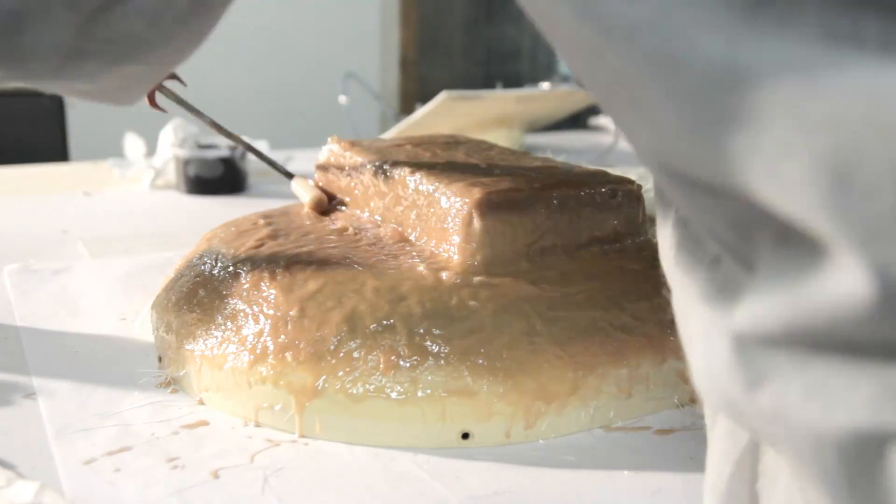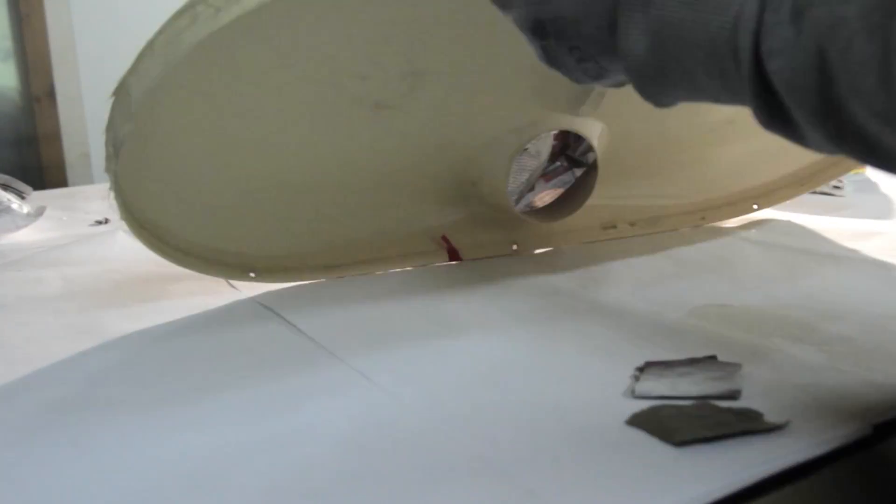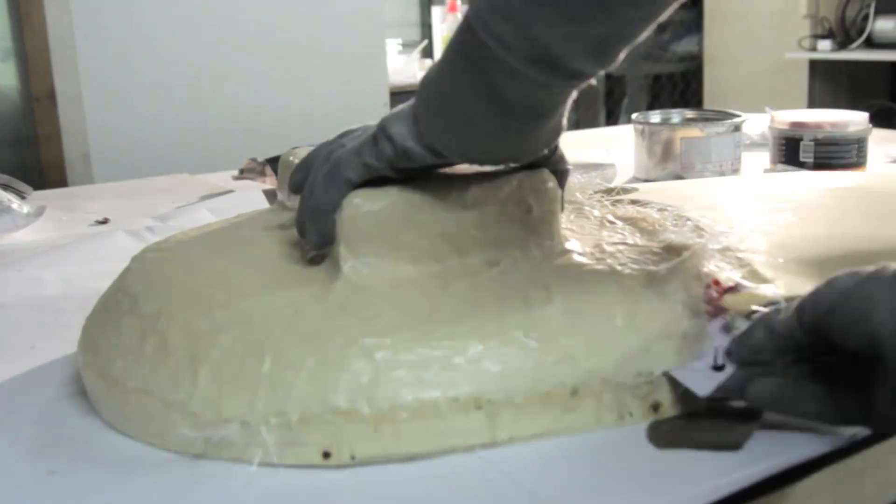I'm using a roller just to make sure all the air is removed. It will also level out the resin to make sure it's not too thick at some pieces, which could create overheat and distortion after demolding.